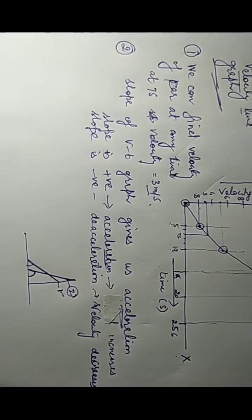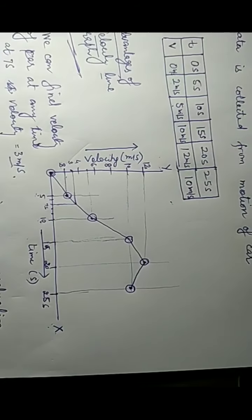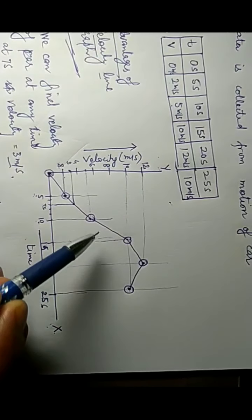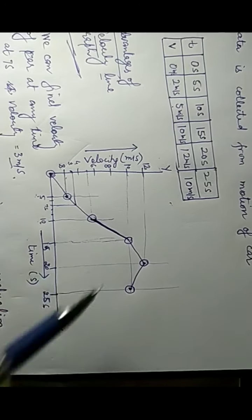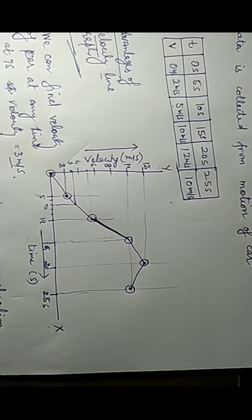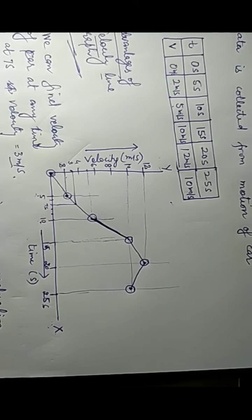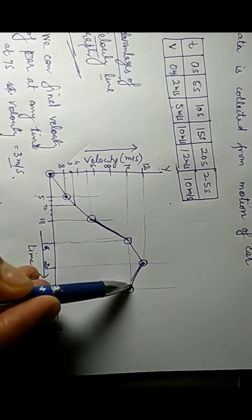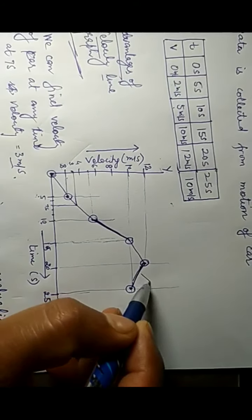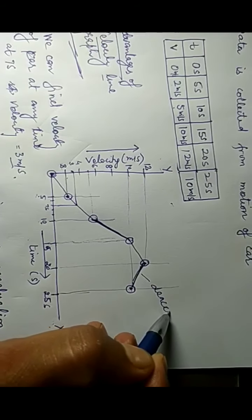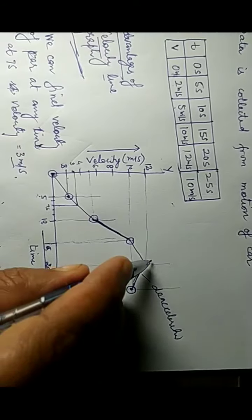By knowing the slope of the graph, I can find the acceleration. From this graph, you can see that the slantness is maximum in one region — so acceleration is maximum there. In another region, the slope is negative, meaning the car is decelerating. The remaining portions show smaller slopes, indicating minimum acceleration.